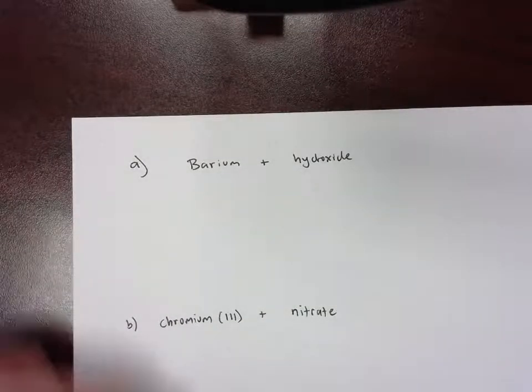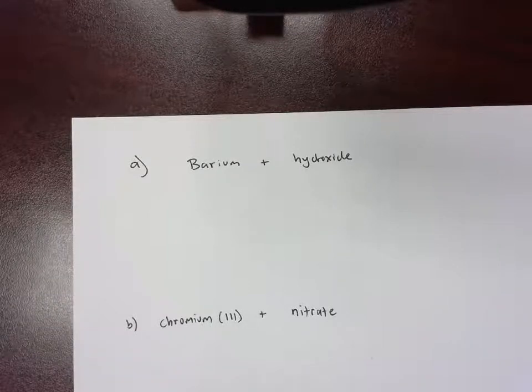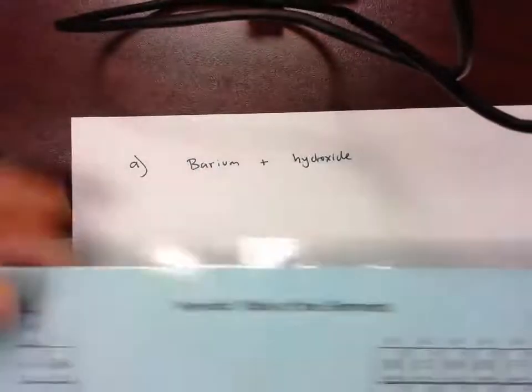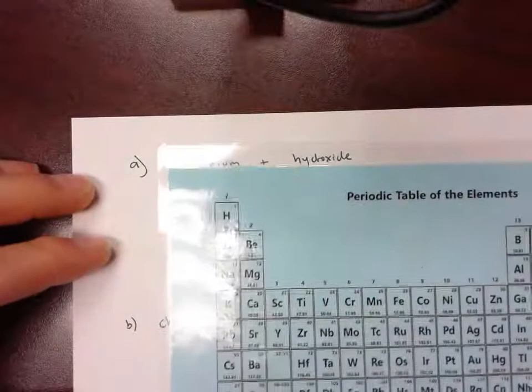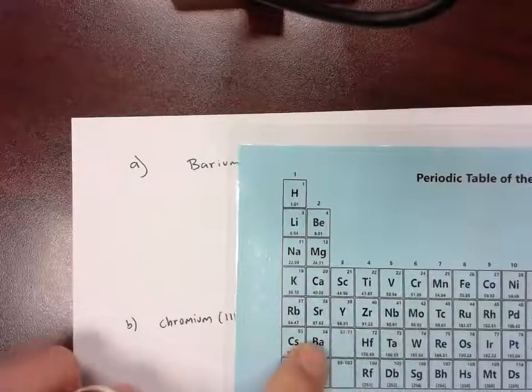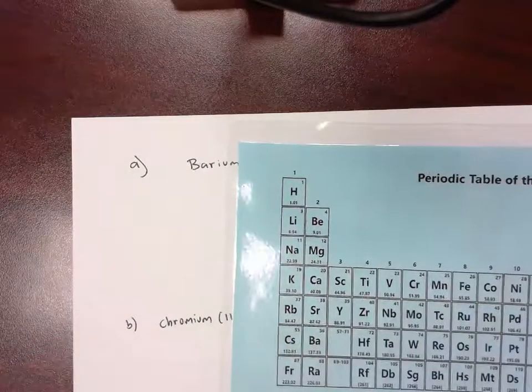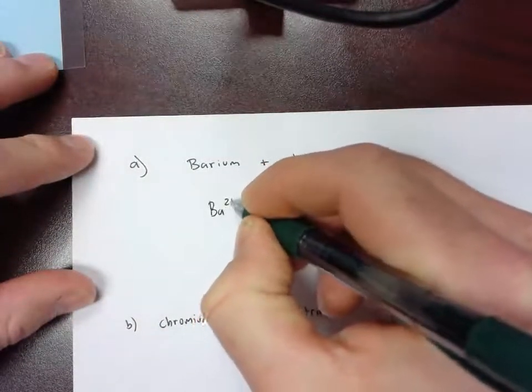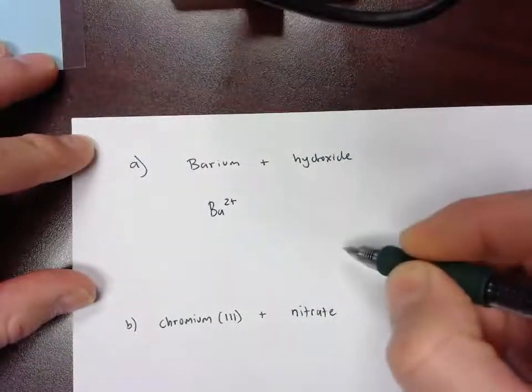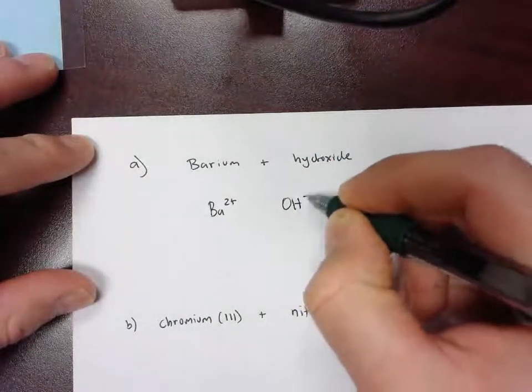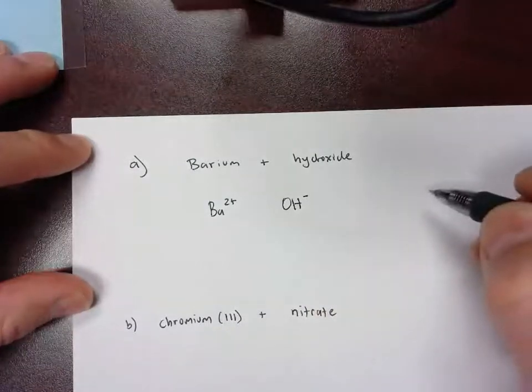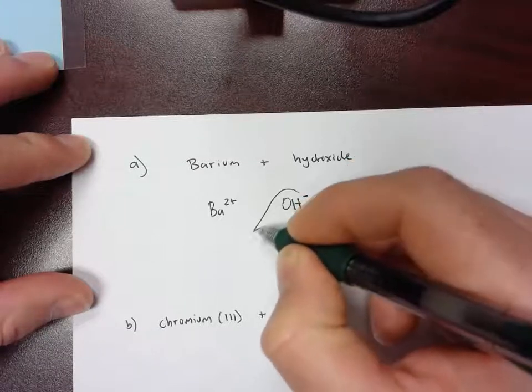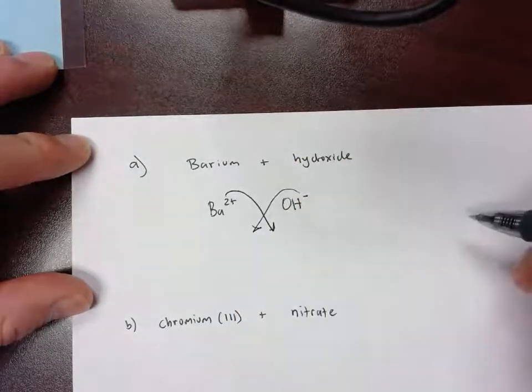My first one is barium and hydroxide. First thing you need to do is know how to predict the charge on barium. If I look at my periodic table, I see that barium is in group 2, that means it's going to have a 2+ charge. So I'll write out the symbol Ba2+. And then remember hydroxide is one of your polyatomics that you memorize, and that is OH with a 1- charge.